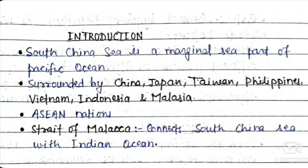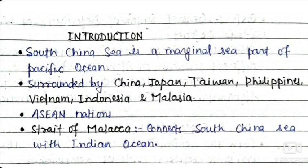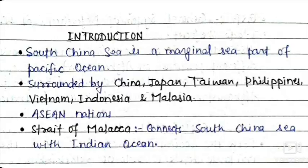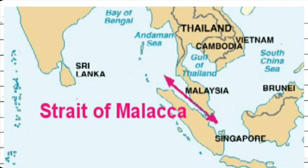The South China Sea is surrounded by China, Japan, Taiwan, Philippines, Vietnam, Indonesia, and Malaysia. There are disputes over several islands: between China and Philippines over the Spratly and Paracel Islands, between China and Taiwan over the Pratas Island, and between China and Japan over the Senkaku Islands. Most surrounding countries are members of ASEAN — the Association of Southeast Asian Nations.